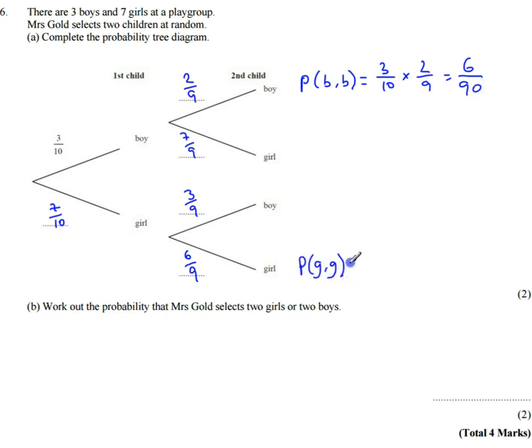And the probability of her picking a girl followed by another girl is going to be equal to seven tenths times six ninths.